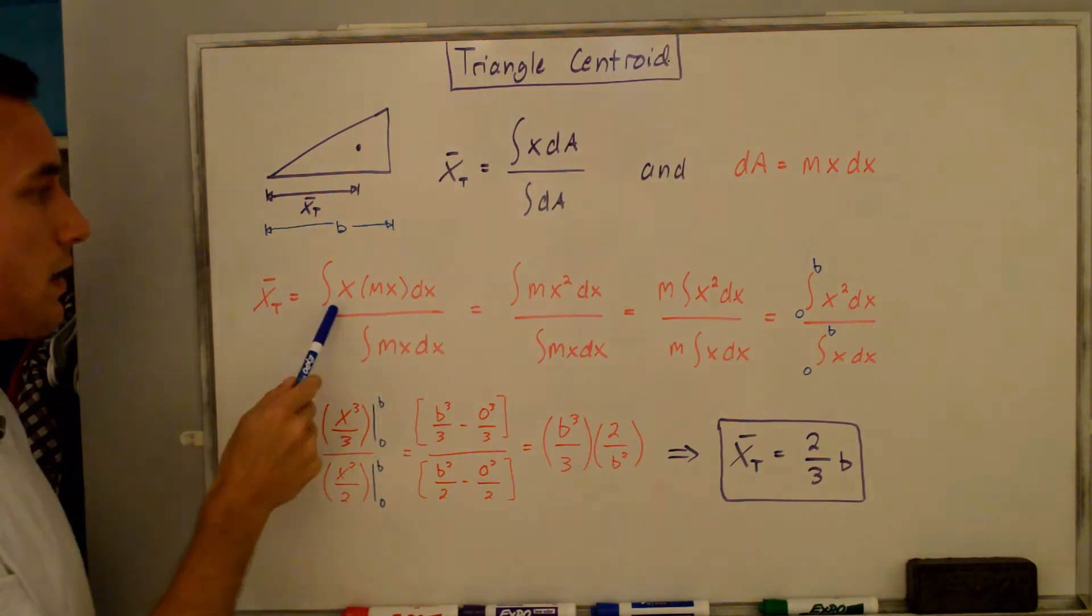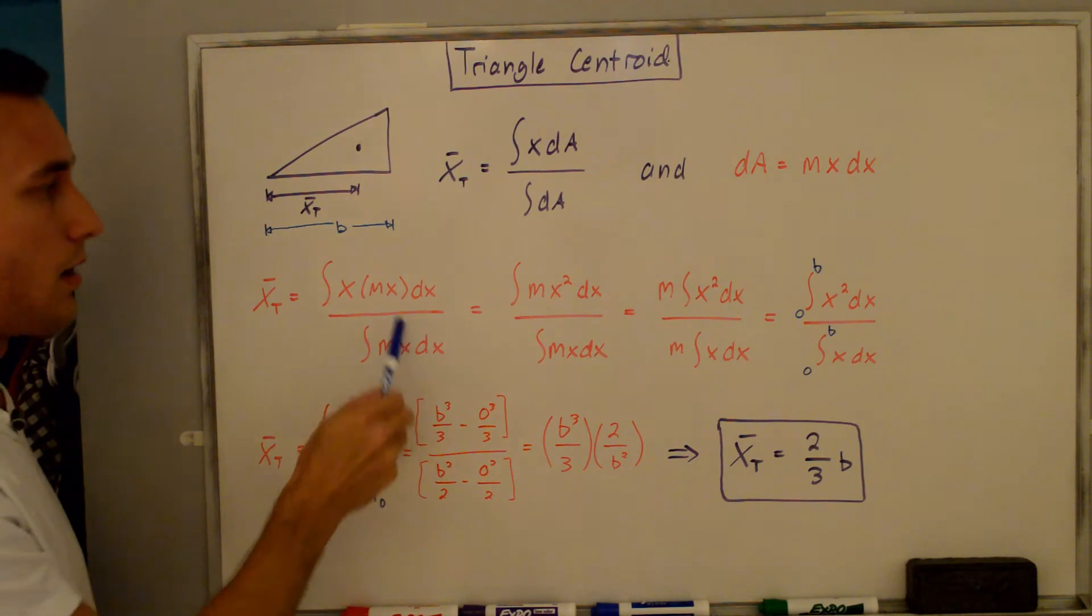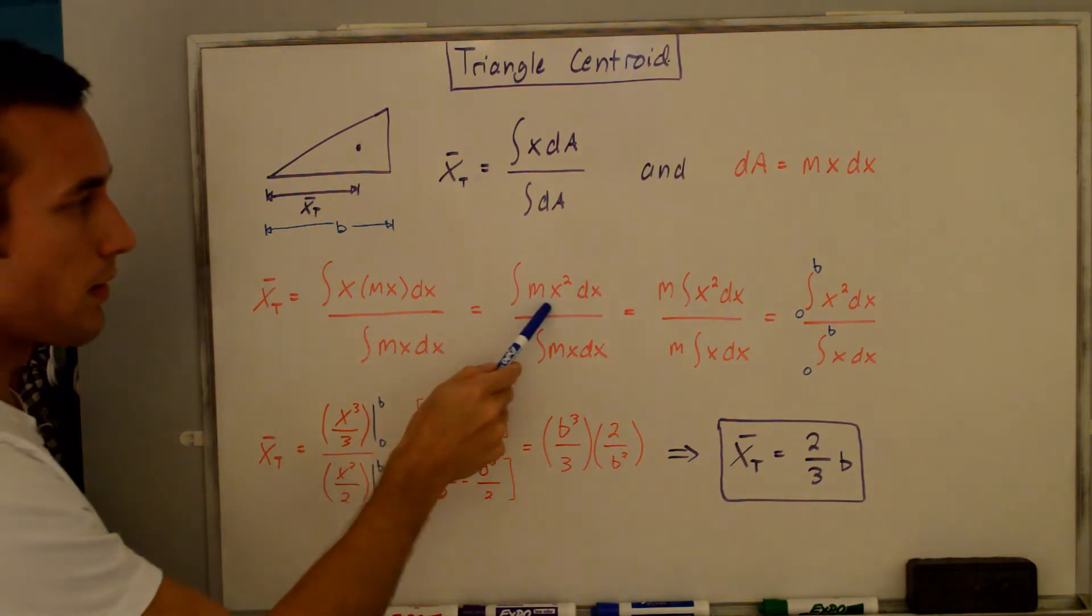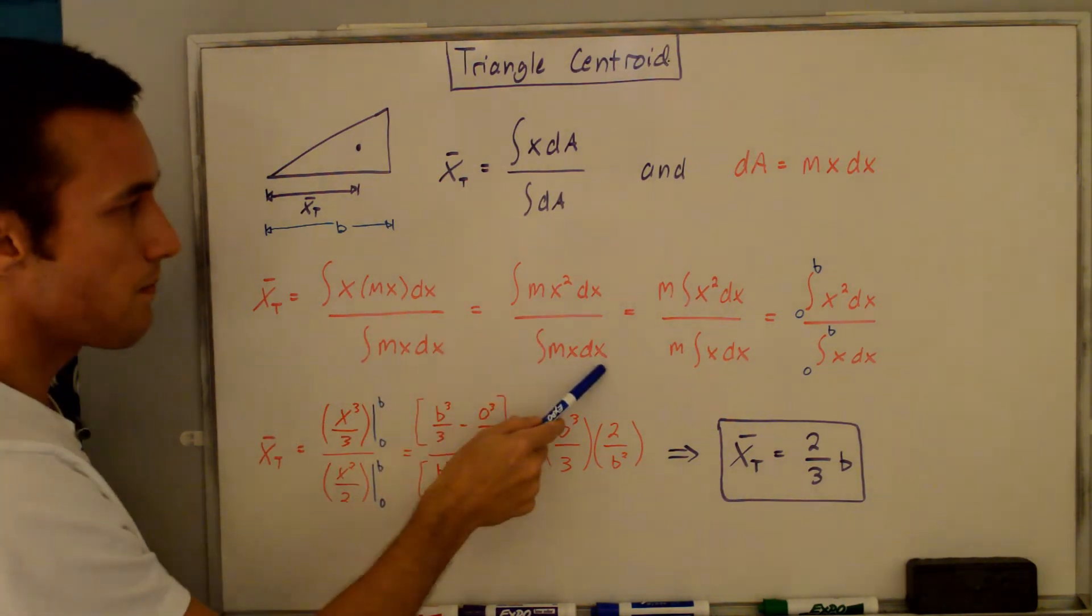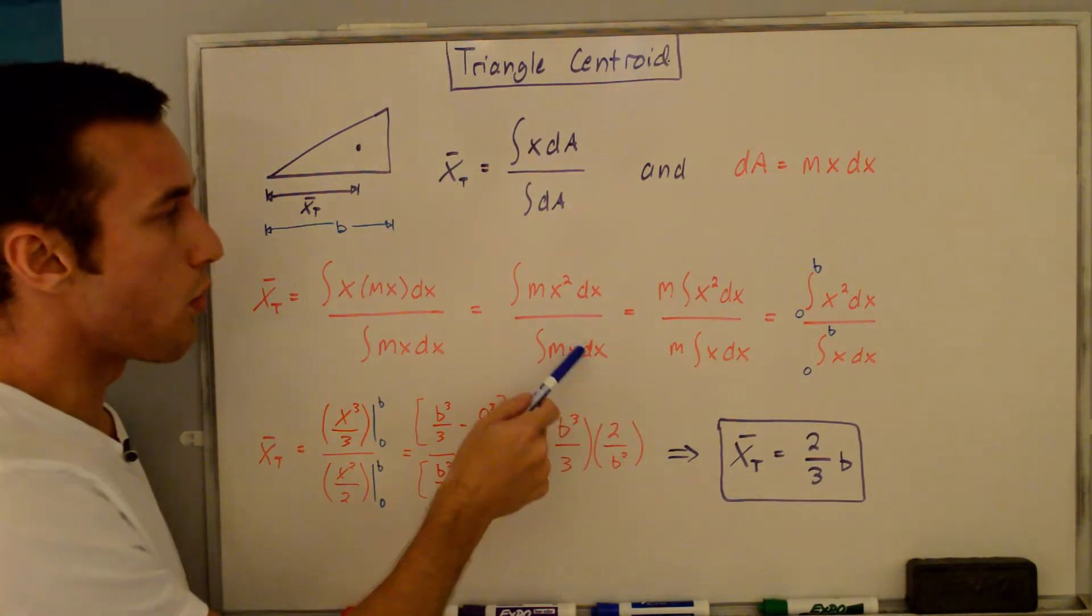Plugging into the numerator and denominator, we get the integral of x times mx dx over the integral of mx dx. Multiplying the x's together, we get the integral of mx² dx. We can take the m's out, the slope of the line, because they're constant, out of both integrals.